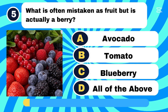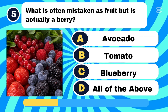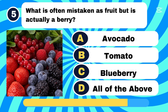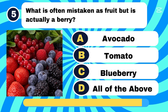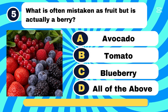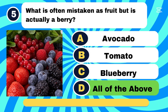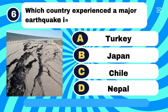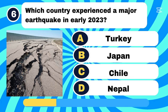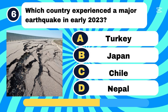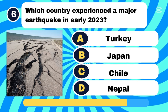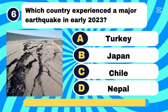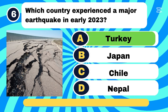What is often mistaken as a fruit but is actually a berry? Letter D, all of the above. Which country experienced a major earthquake in early 2023? Letter A, Turkey.